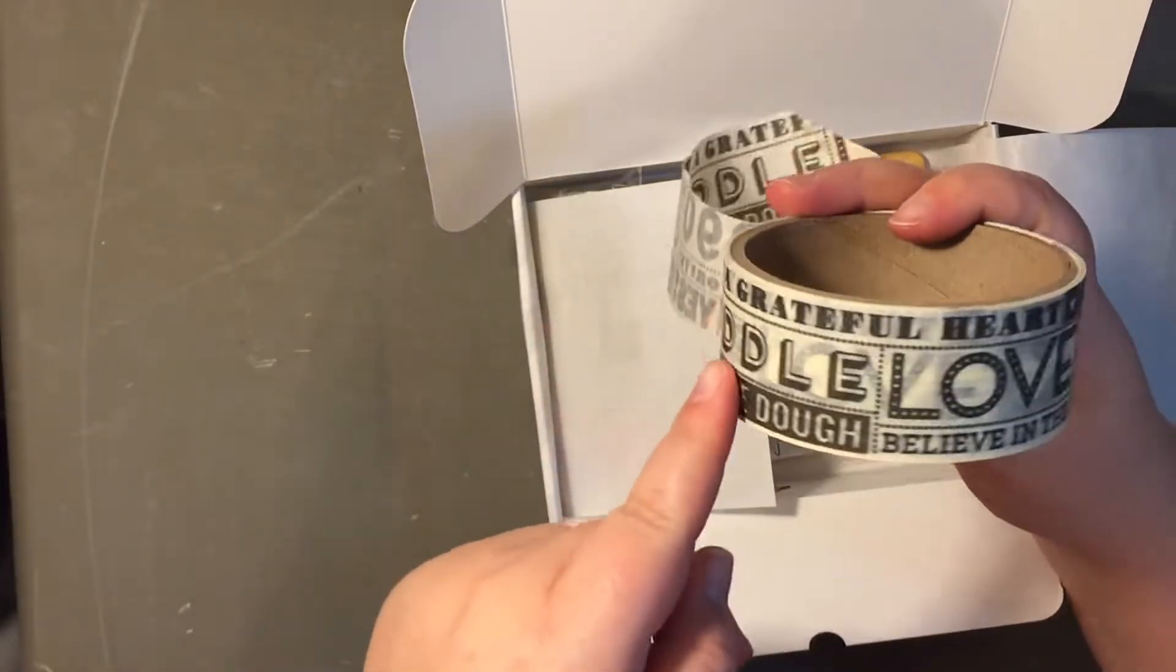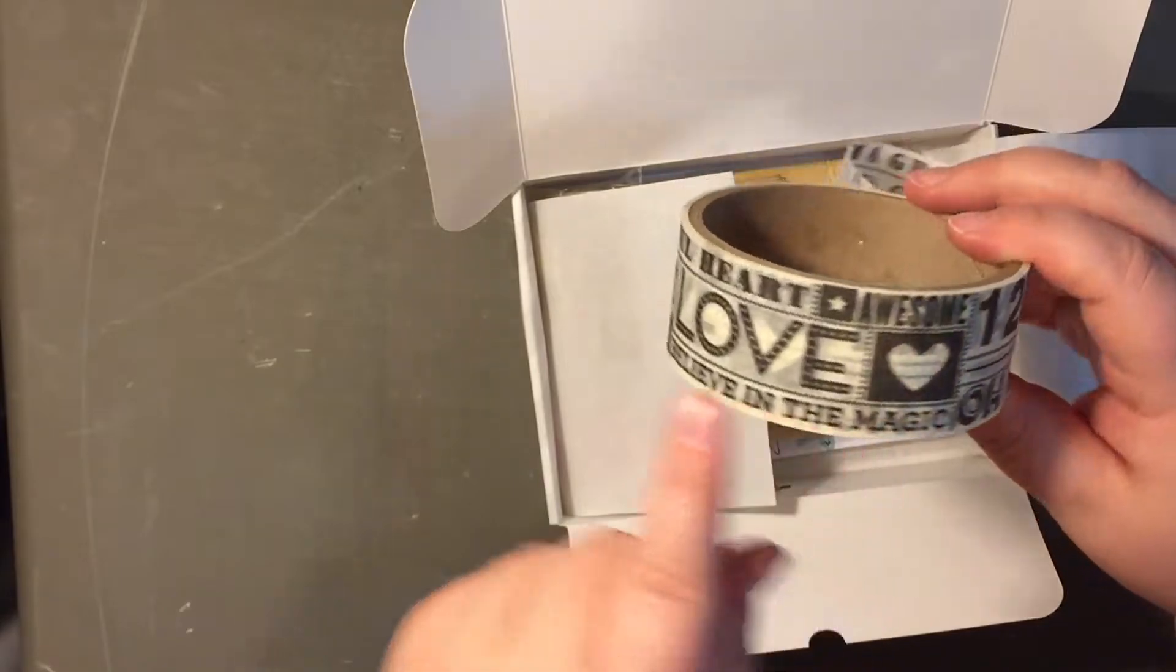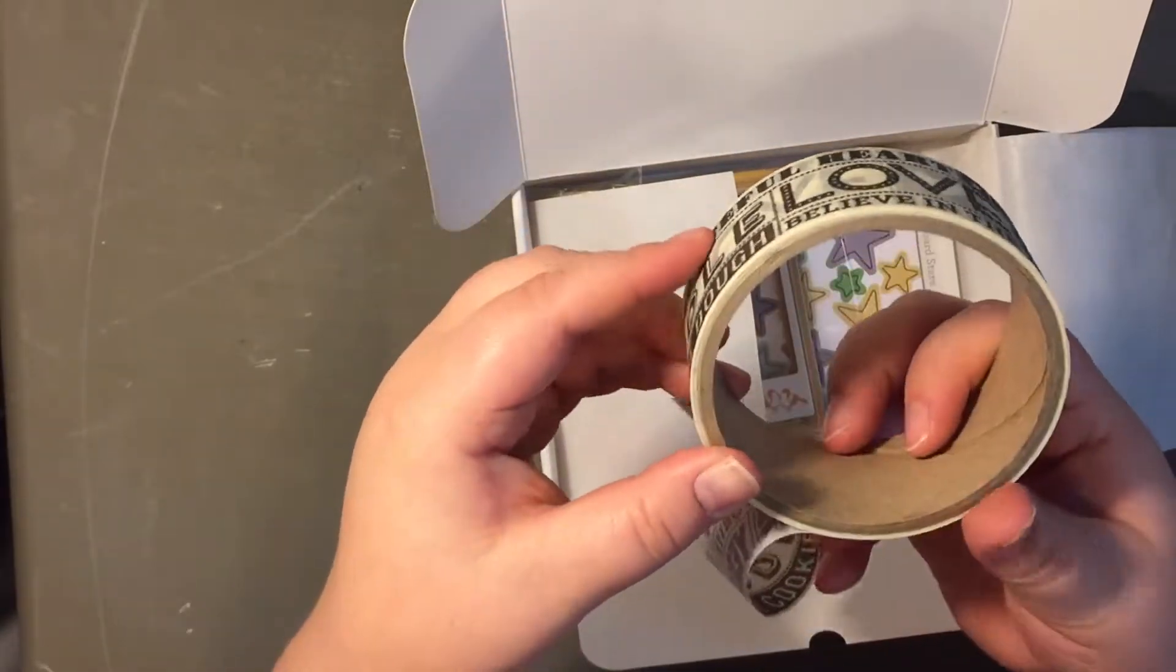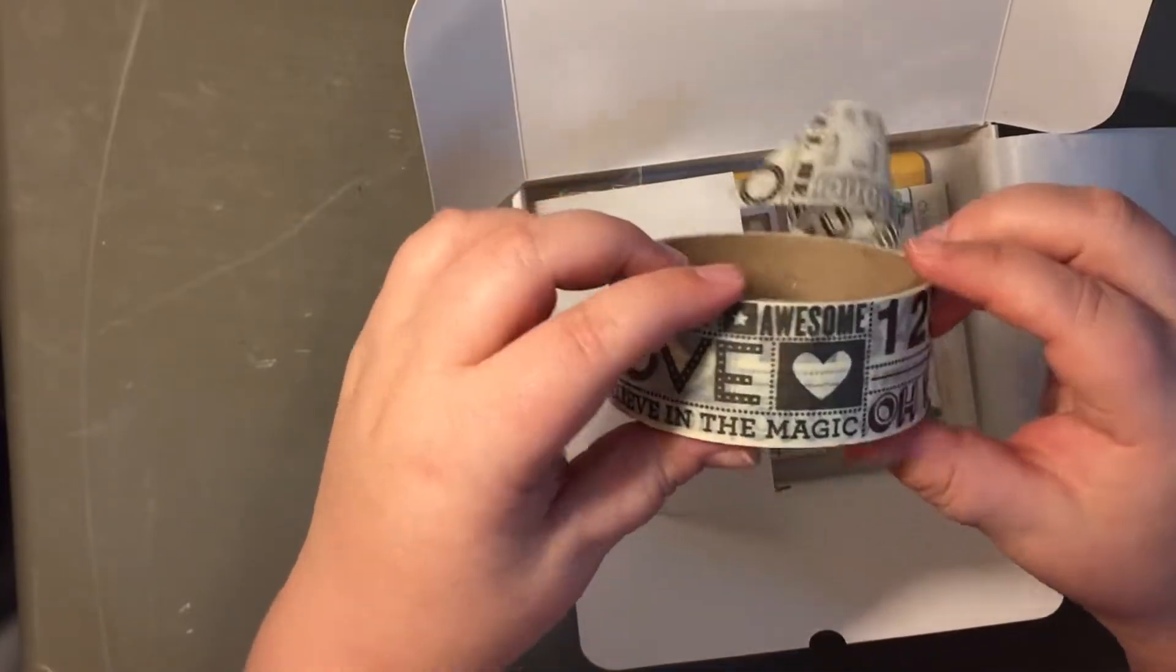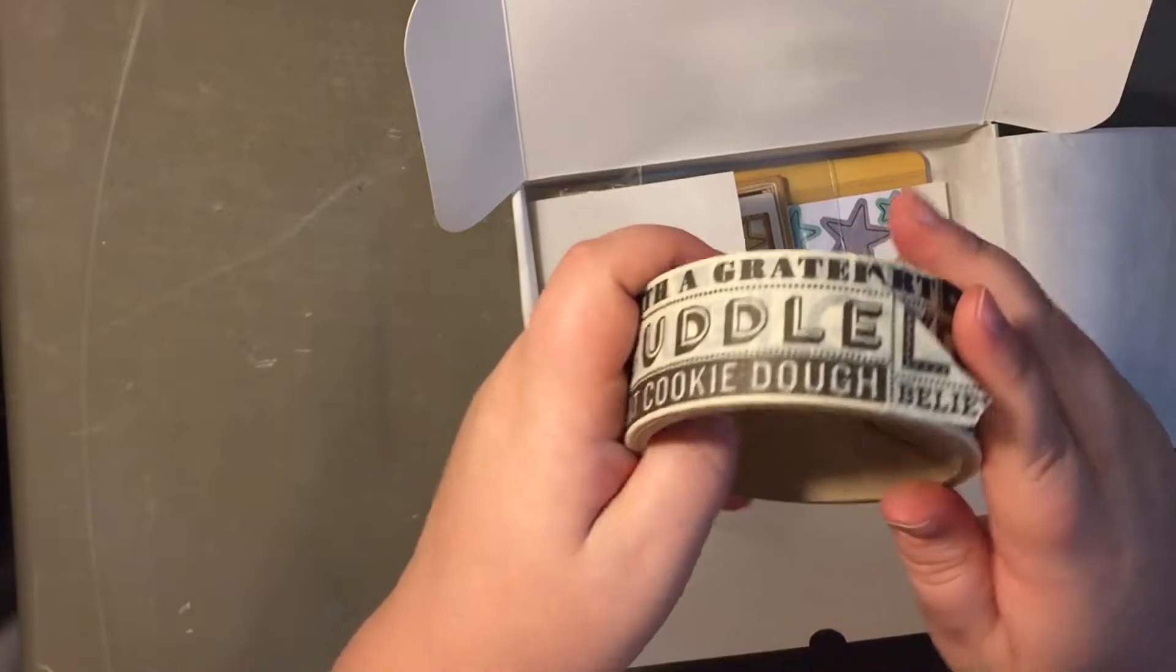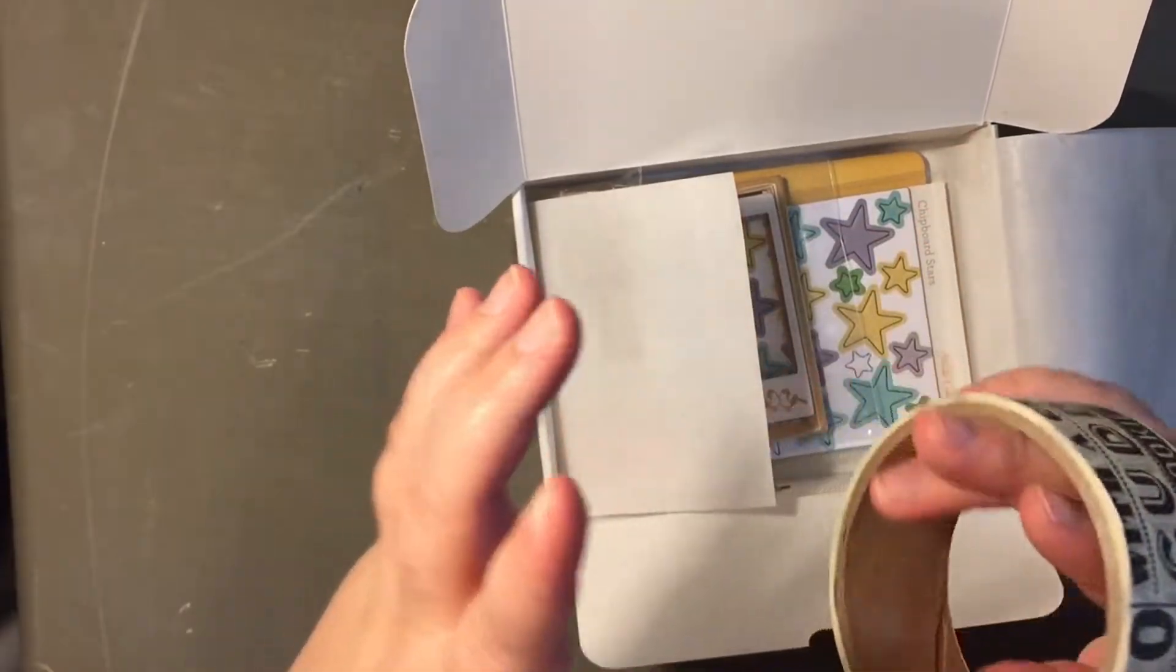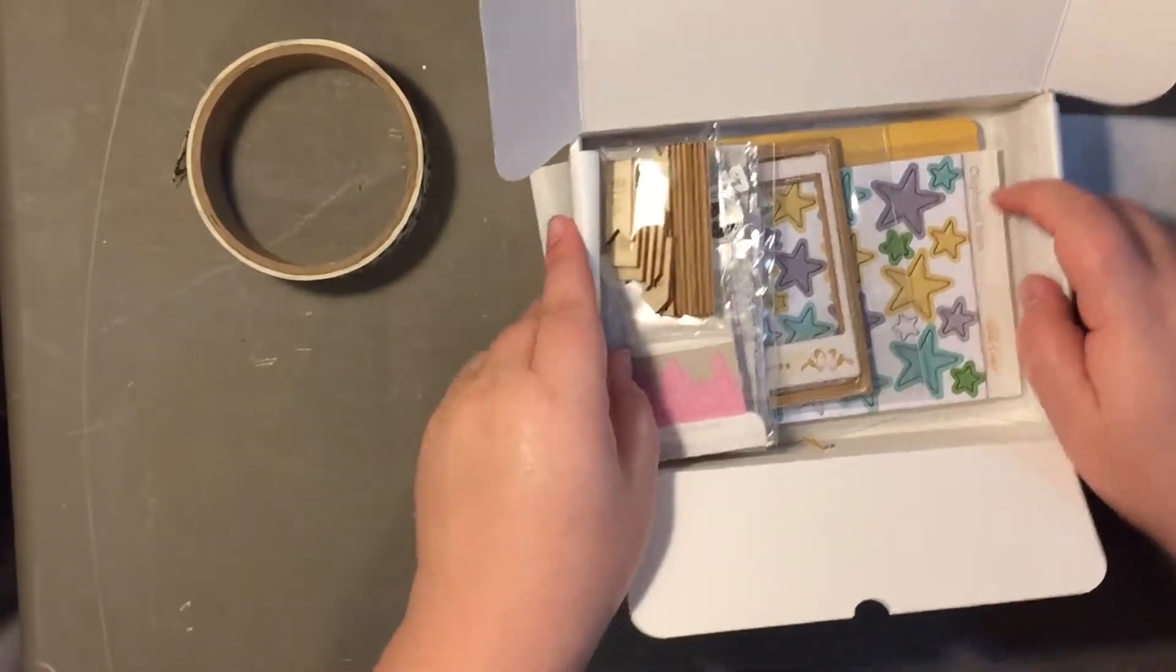And then it just repeats. So it's just those like kind of two sections. But I really like this tape. There's not a ton of it on the roll, but that's fine because you don't need a ton of washi tape. We already have a ton of washi tape, but I really like this. It's really different. It's like big space wise. So that's kind of different.